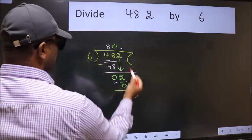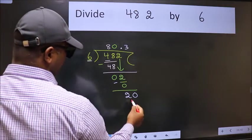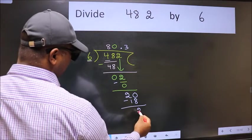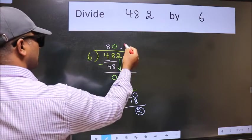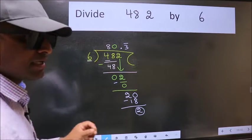6 times 3 is 18. Now we subtract, we got 2 again. That means we get bar on this number.